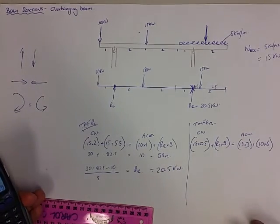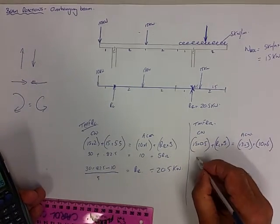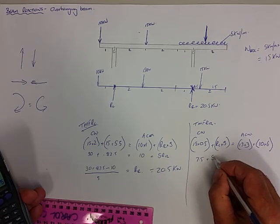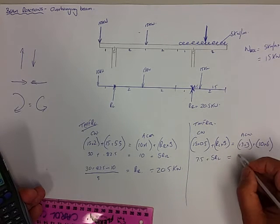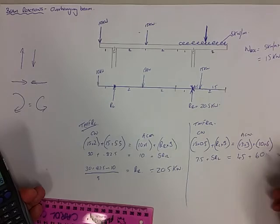So let's simplify these equations. 7.5 plus 5 RL equals 45 plus 60.